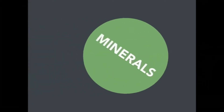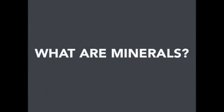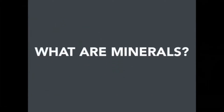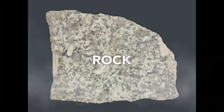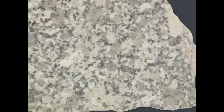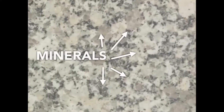In this video we're going to be talking about minerals. Minerals are the building blocks of rocks. Here is a piece of the igneous rock called granite — if you look carefully, you'll see speckles of gray, white, and black, which are actually mineral crystals. This particular piece of granite contains the minerals quartz, biotite mica, and plagioclase feldspar.